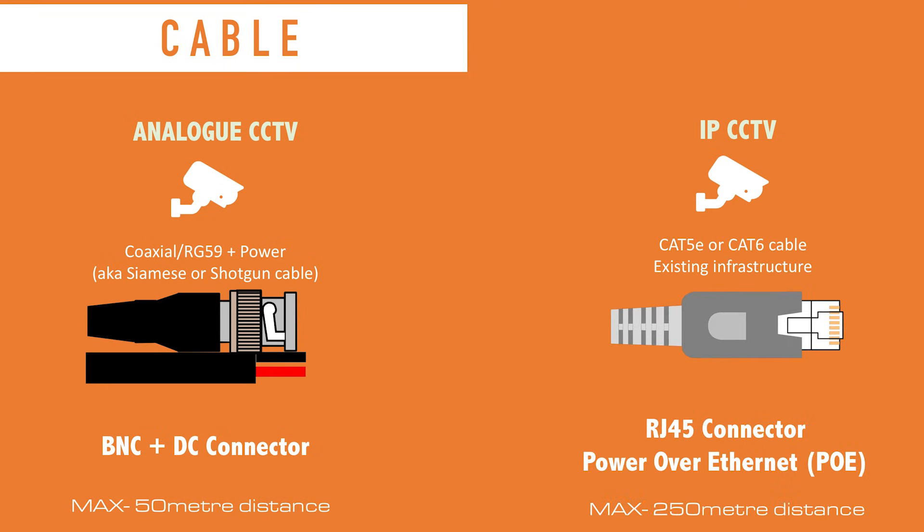IP systems use a Cat5e or Cat6 cable, which is usually UTP — unshielded twisted pair. In larger buildings, you will already see this type of infrastructure used for the networking of computer systems, so it uses the same type of cable. The connector is known as an RJ45. You don't usually have a separate power connector because the RJ45 carries power — that's known as power over ethernet.